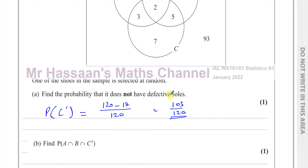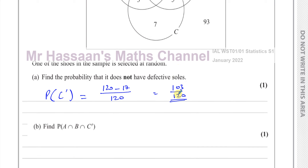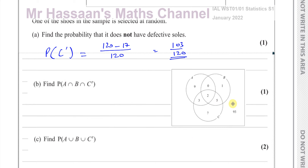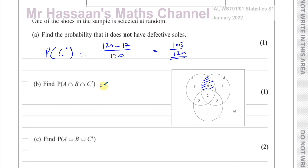Next, find the probability of A intersection B intersection C complement. It's useful to think about how the shading would work on the Venn diagram. It has to be in A intersection B — this area over here — but it must also be outside of C. So it's the part of A intersection B that excludes C. That shaded area turns out to be zero, so the probability is zero.